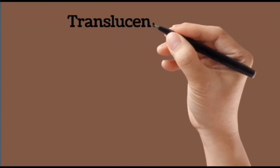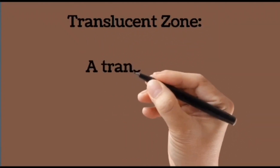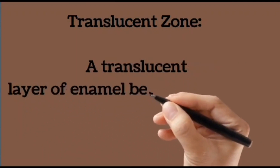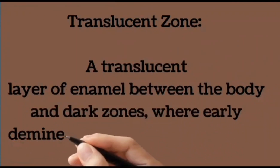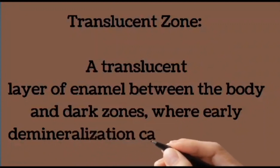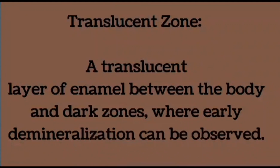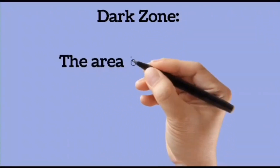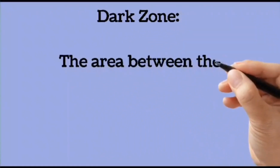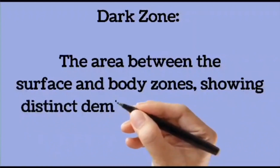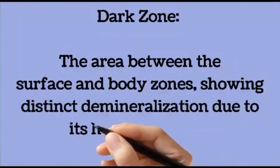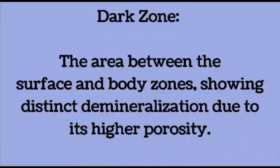Enamel caries has four zones. The first zone is the translucent zone, which is the layer of enamel between the body and the dark zone, where early demineralization can be observed. The second zone is the dark zone, which is the area between the surface and the body zones, showing distinct demineralization due to its higher porosity.